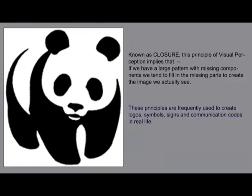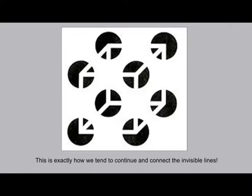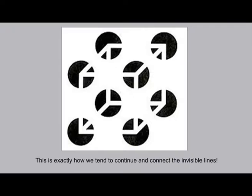This logo of a panda has some suggestions of black shapes, but it is left up to us to imagine and complete the rest of the form. These principles are frequently used to create logos, symbols, signs, and communication codes in real life. Even if you try very hard not to, you are bound to complete the missing links — a diagram which has not actually been shown but suggested by leaving certain white portions and white lines against black shapes. This is exactly how we tend to continue and connect the invisible lines.